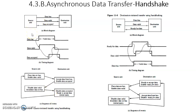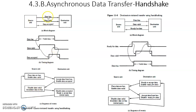Let us look at source-initiated handshake data transfer. The source unit wants to send data to the destination unit, so it places valid data on the data bus and makes the data-valid signal from low to high. The destination unit detects this, accepts the data from the data bus, and conveys this by making the data-accepted line from low to high. Upon detecting this change, the source unit removes the valid data from the data bus and disables the data-valid signal. Then the destination unit disables the data-accepted signal. This is how both units communicate.